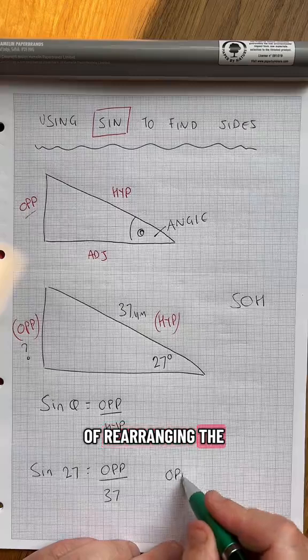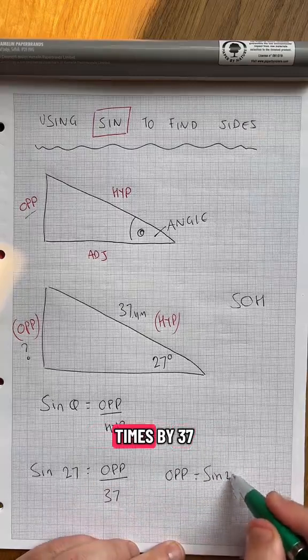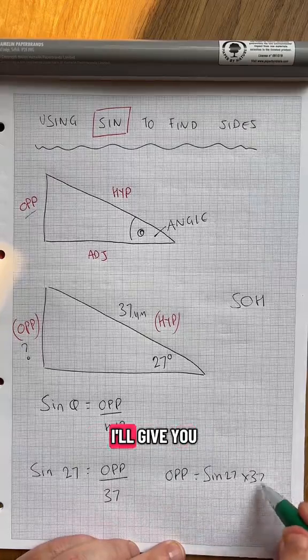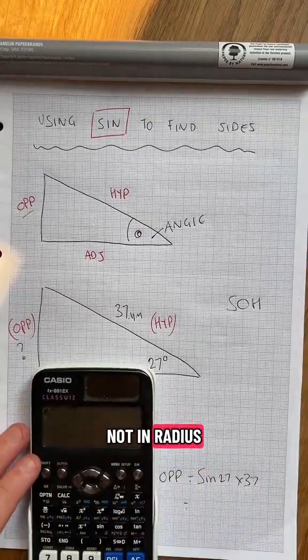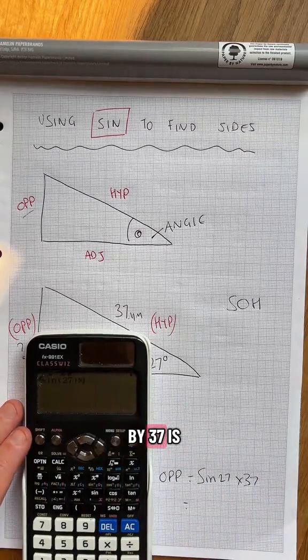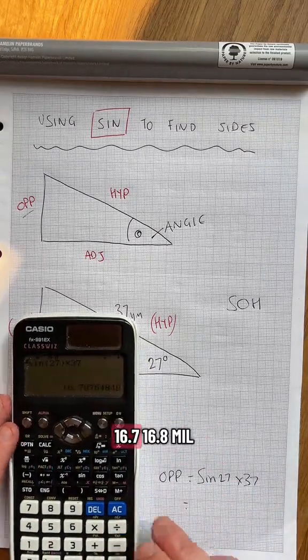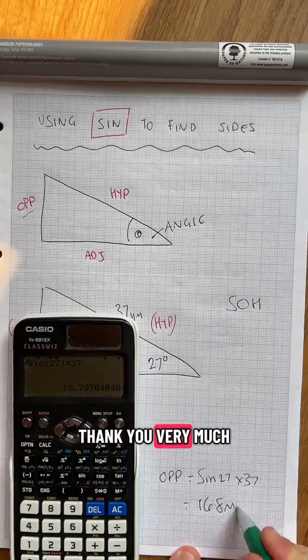So do a bit of rearranging. The opposite is going to be sine 27 times by 37. I'll give us the opposite. Get your calculator, make sure you're not in radians. Sine 27 times by 37 is the opposite side, 16.7, 16.8 mil. Thank you very much.